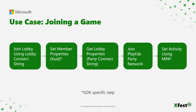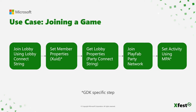Joining a game has a relatively similar flow. You can get a lobby connection string via an invite or from a friend's activity. Join the lobby and wait for the state change event signaling completion, then write your zooid as a member property. Connect to the party network using the network's connection string, and finally set an activity using MPA.